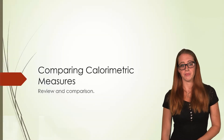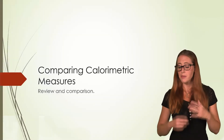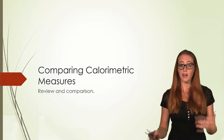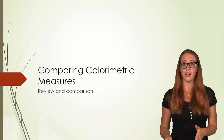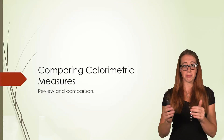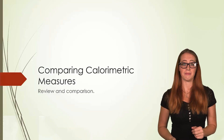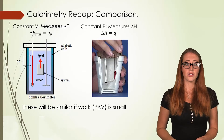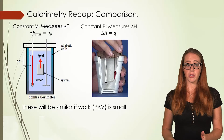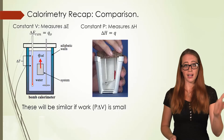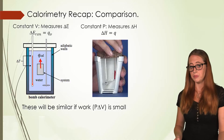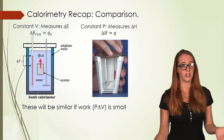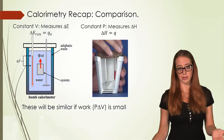Comparing calorimetric measures — this is purely a review and comparison of two concepts we've talked about, so we can put them side by side. We have our two calorimetries: constant volume, or bomb calorimetry, and constant pressure, or coffee cup calorimetry.